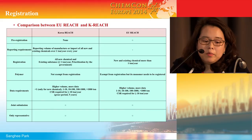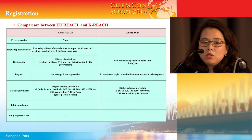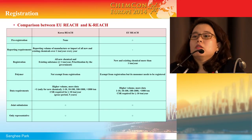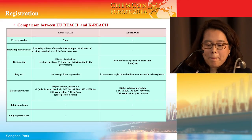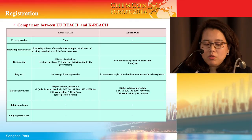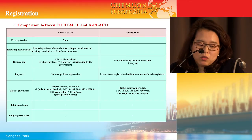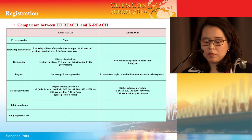This is the comparison table between EU REACH and K-REACH. Under K-REACH there is no pre-registration stage, but instead there are reporting requirements and registration for both new and existing chemicals. Polymers under K-REACH are not exempt from registration. Data requirements are higher volume with more data. The joint submission and only representative concepts are the same as EU REACH, as are product notification and product management.